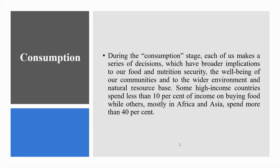The consumption stage: a food system does not only capture how something is grown; it also includes how a food is cooked, eaten and disposed of by consumers. During this consumption stage, each of us makes a series of decisions which have broader implications to our food and nutrition security, the well-being of our communities and to the wider environment and natural resource base. Some high-income countries spend less than 10% of income on buying food while others, mostly in Africa and Asia, spend more than 40%. Likewise, while some countries are facing obesity epidemics, others suffer from the impacts of undernutrition.